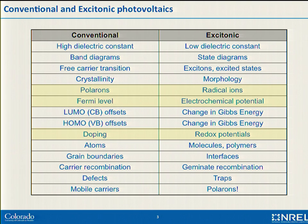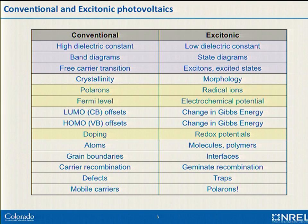I wouldn't spend much time arguing about the differences. The biggest difference between conventional PV and excitonic is the dielectric constant of the medium. Conventional PV tends to work with high dielectric materials — lots of screening — so when you put in a photon, you get a free carrier transition. In excitonic solar cells, certainly most of the polymer and molecular devices, you get bound electron-hole pairs, which is another name for the exciton.